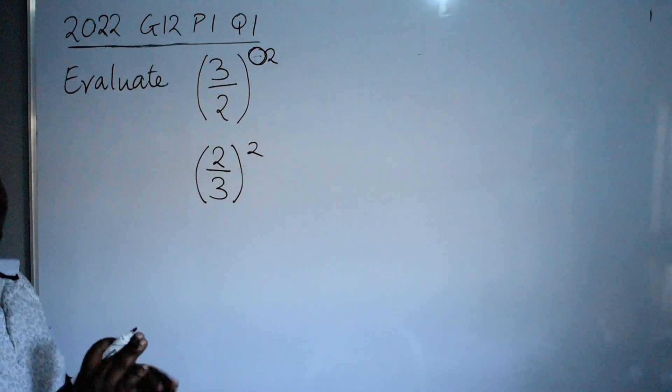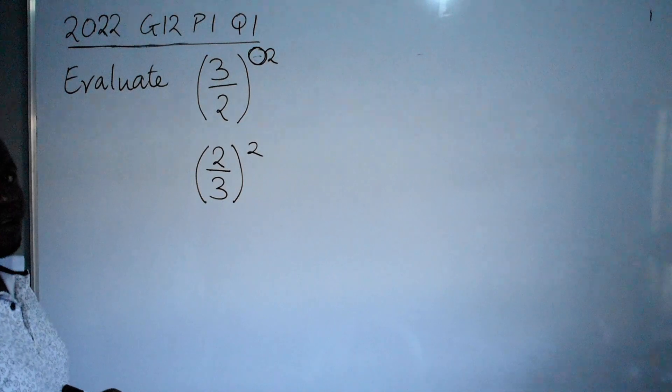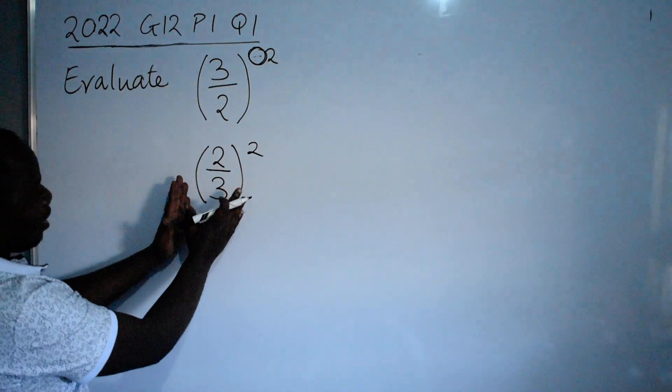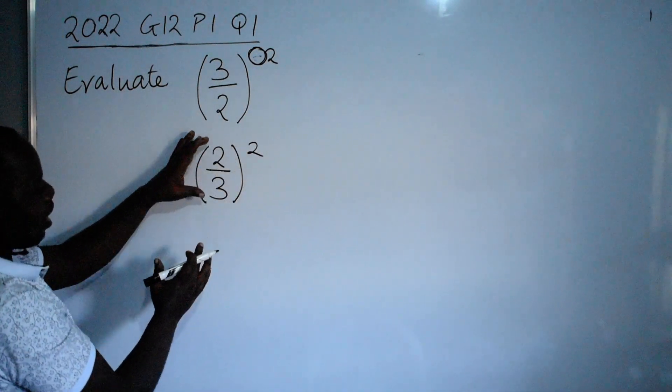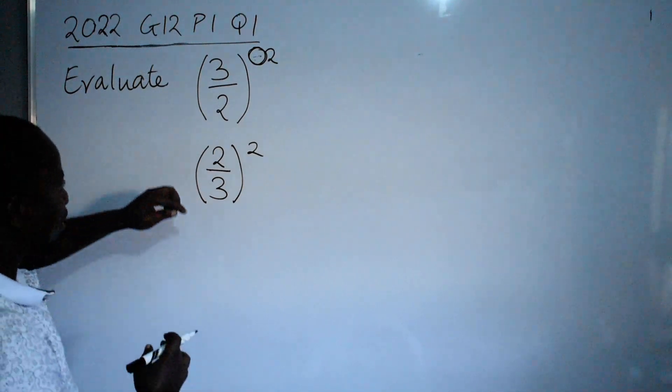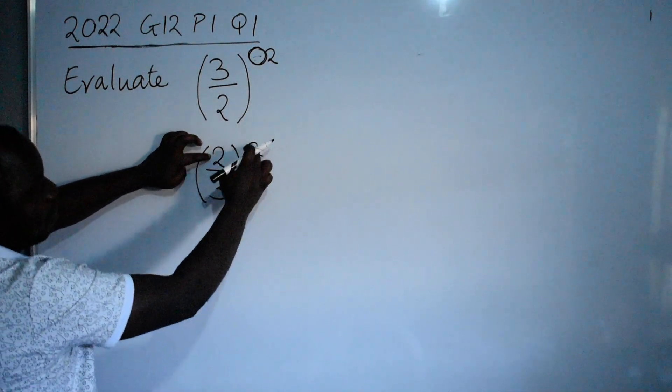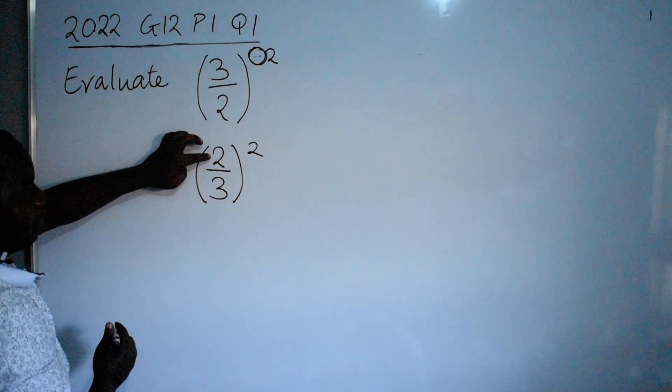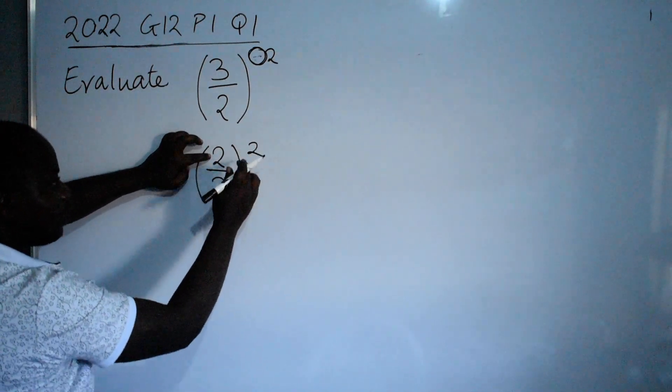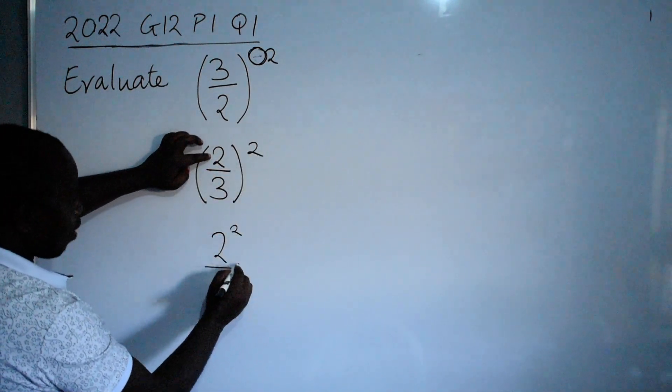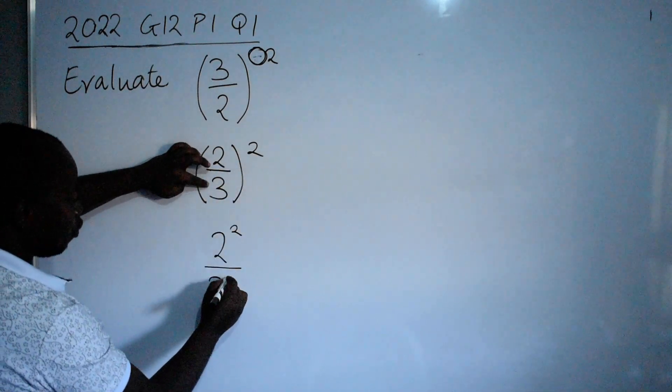So that is what you need to know. I hope you are following me. At this stage, you can now write this in another way. 2 over 3 raised to the power 2 means 2 raised to the power 2 over 3 raised to the power 2.